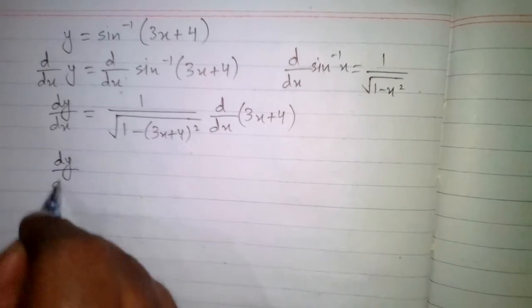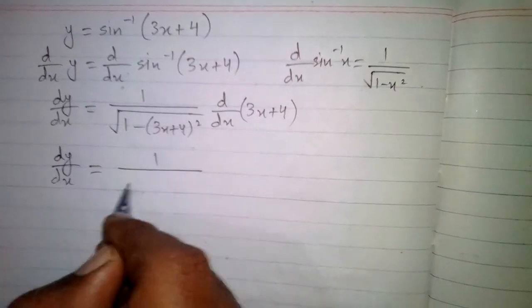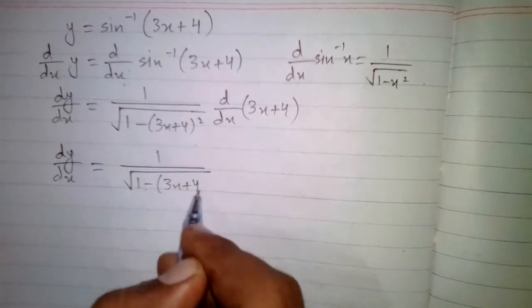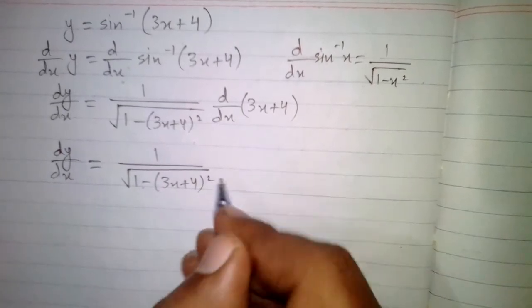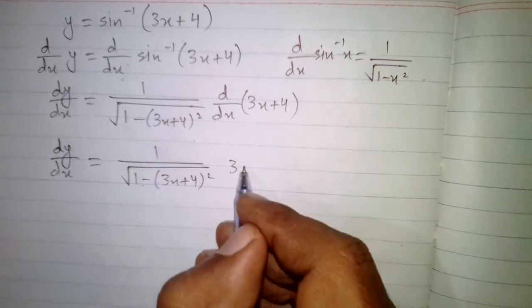So the derivative dy by dx is equal to 1 upon square root of 1 minus 3x plus 4 whole square, and the derivative of 3x plus 4 is 3.